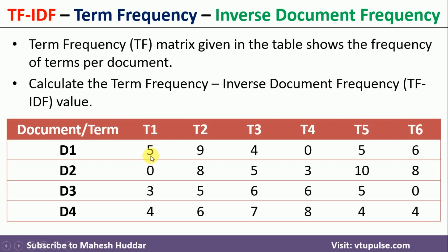We need to count the frequency of every word and fill this table. For example, T1 appears 5 times in D1, T2 appears 9 times in D1, T3 appears 4 times in D1, T4 is not present in D1, T5 appears 5 times, and T6 appears 6 times in D1. For D2: T1 is not present, T2 appears 8 times, T3 appears 5 times, T4 appears 3 times, T5 appears 10 times, and T6 appears 8 times. This completed matrix is called the term frequency matrix.